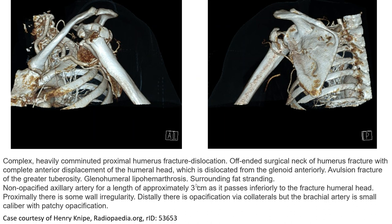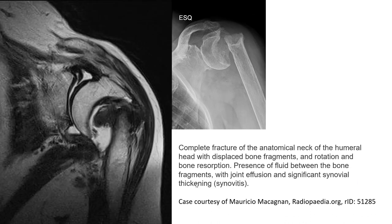Proximally there is some wall irregularity. Distally there is opacification, but the brachial artery is small-caliber with patchy opacification. This is the humeral radiograph of the same case.